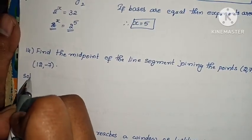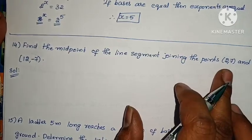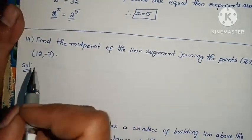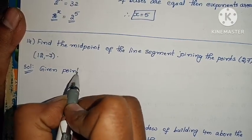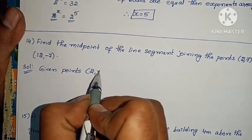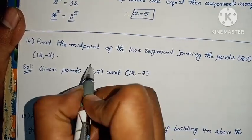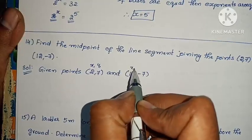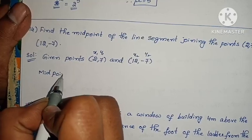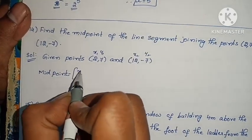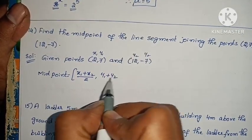Next, the 14th question: Find the midpoint of the line segment joining the points (2, 7) and (12, -7). Given points: (x1, y1) = (2, 7) and (x2, y2) = (12, -7). Midpoint equals to (x1 plus x2) by 2, comma (y1 plus y2) by 2.